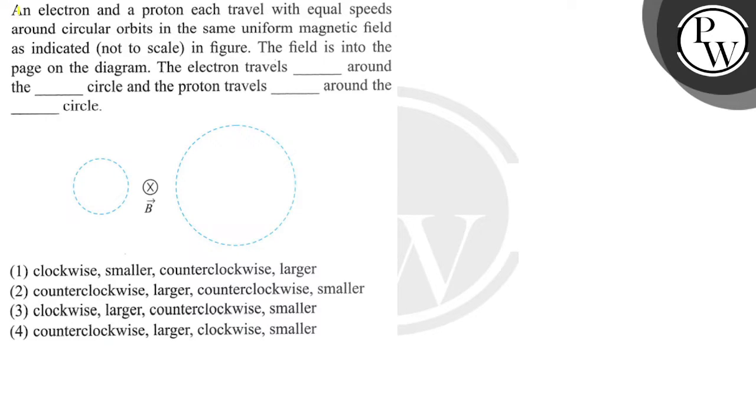Now let's discuss the question. The question says an electron and a proton each travel with equal speeds around circular orbits in the same uniform magnetic field as indicated in figure. The field is into the page on the diagram.